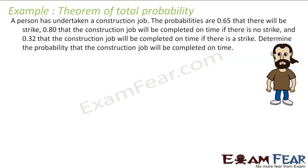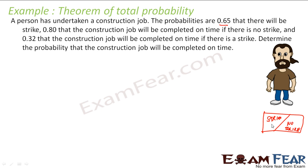I will take an example. A person has undergone a construction job. The probability is 0.65 that there will be a strike. The probability is 0.8 that the construction job will be completed on time if there is no strike. And 0.32 that the construction job will be completed on time if there is a strike. So here we have divided into two events: strike and no strike. Just two scenarios in this case.